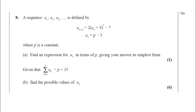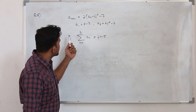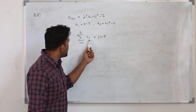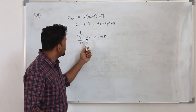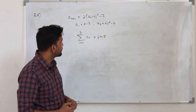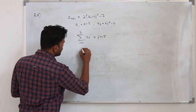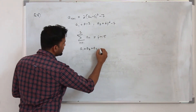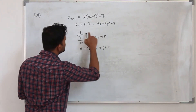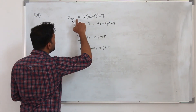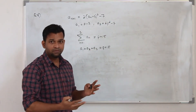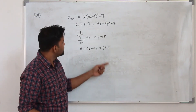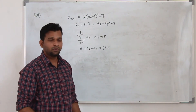Part B: given that the sum from n = 1 to 3 of aₙ equals p + 15, find the possible values of a₂. The question carries 6 marks. This means a₁ + a₂ + a₃ = p + 15. We know a₁ and a₂; now find a₃ by substituting n = 2 into the recurrence: a₃ = 2(a₂ + 3)² − 7. Substitute a₂ = 2p² − 7 to get a₃ = 2(2p² − 7 + 3)² − 7 = 2(2p² − 4)² − 7.